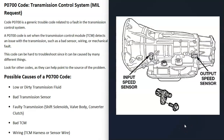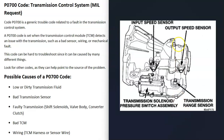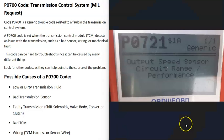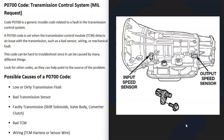The next possible cause is an issue with a sensor on the transmission. Depending on your vehicle's year and make, there can be different sensors, and if one goes bad it will cause an issue and generate an additional code. For example, if you're also getting a P0721 code for output speed sensor circuit range performance, you can locate that sensor on your transmission, test it, and check the wiring going to it.